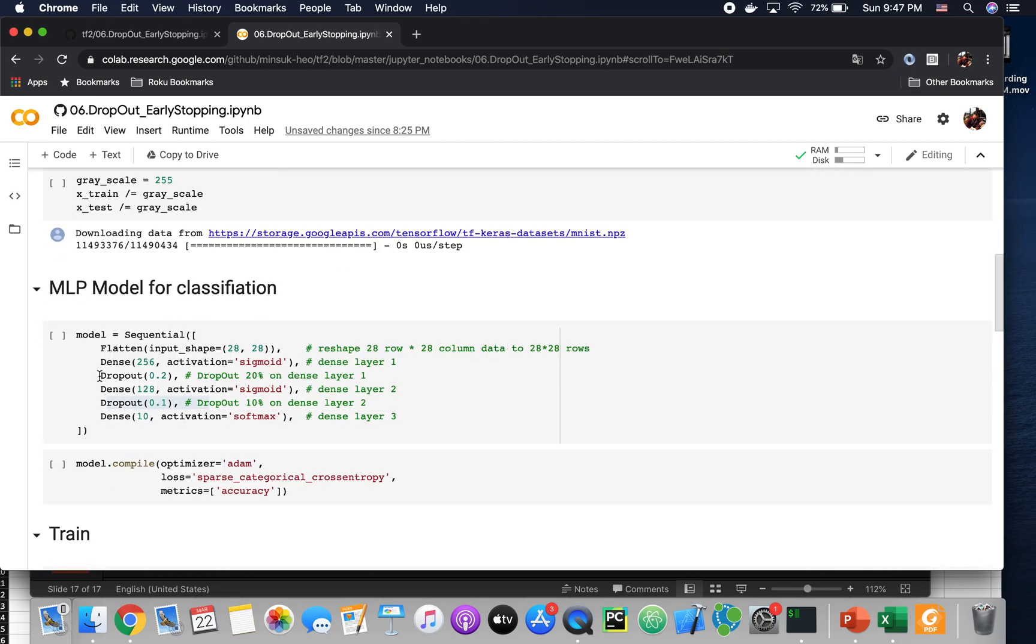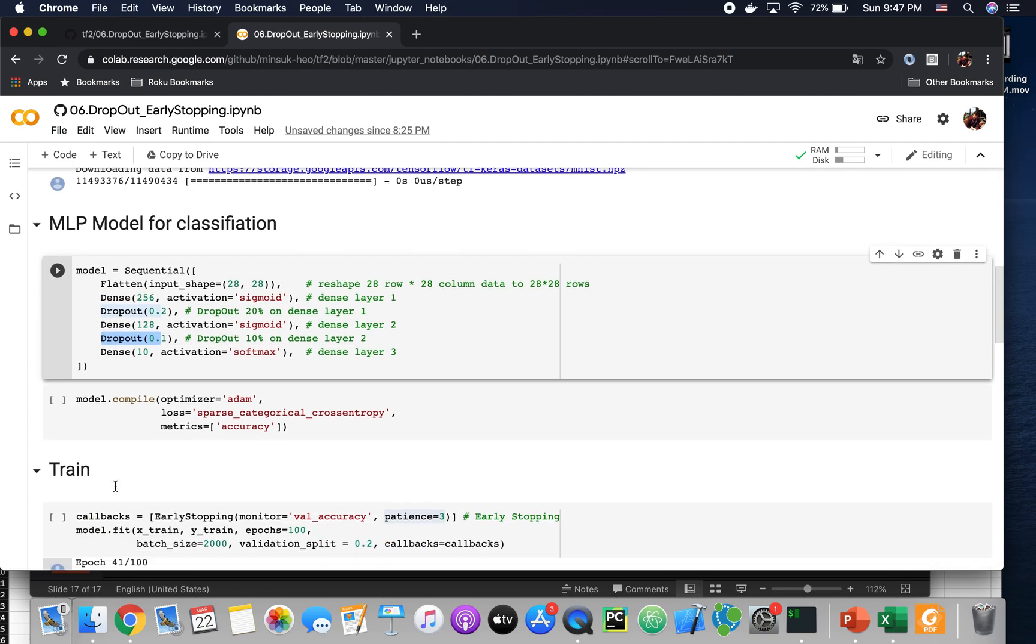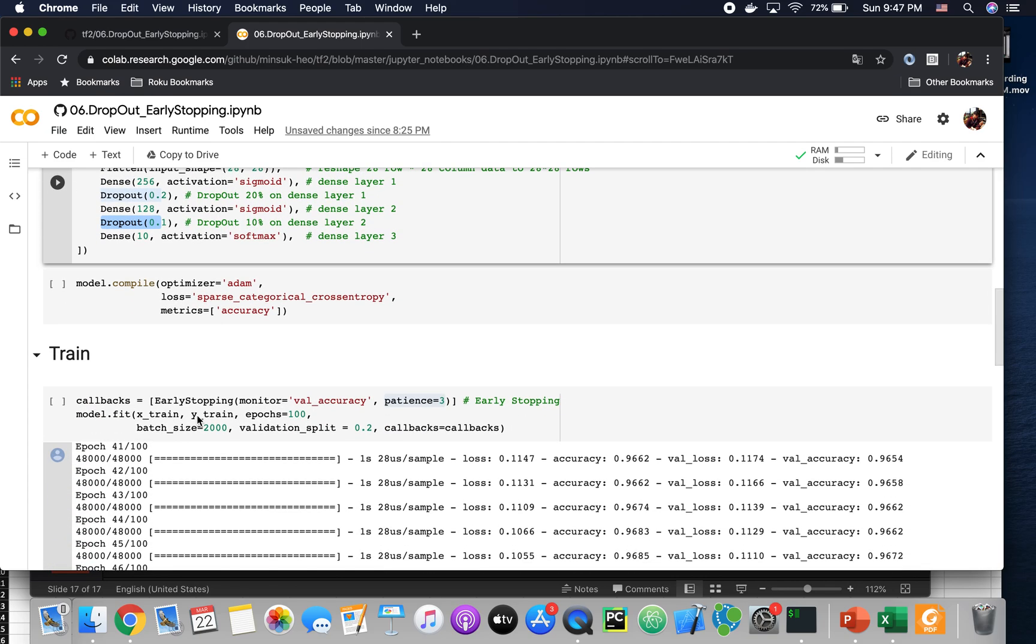Firstly, I want to show you the dropout here and here. And when you train with early stopping, I put the patience as 3 here. With 20% of the training data will be the validation dataset.